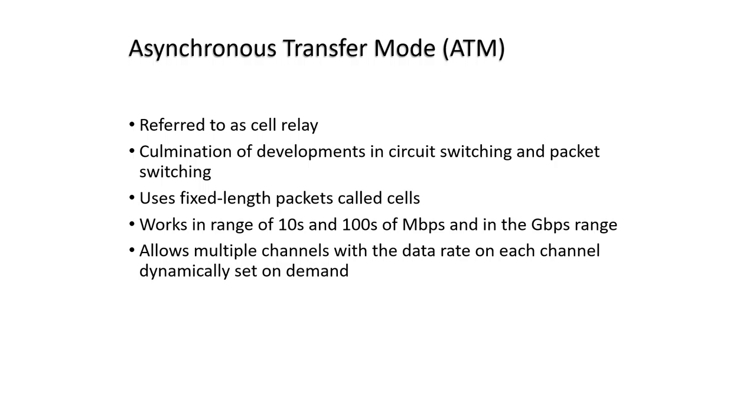Asynchronous transfer mode, also known as cell relay, can be viewed as an evolution from frame relay. The main difference between frame relay and asynchronous transfer mode, or ATM, is that frame relay uses variable length packets called frames, and ATM uses fixed length packets called cells. As with frame relay, ATM provides little overhead for error control because of the reliability of the transmission system and the ability of the systems to catch and correct errors. By using a fixed packet length, the processing overhead is reduced even further for ATM compared to frame relay.